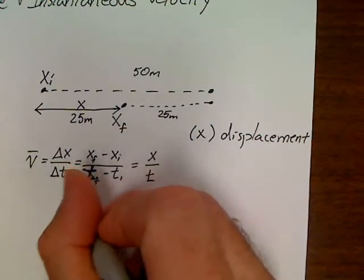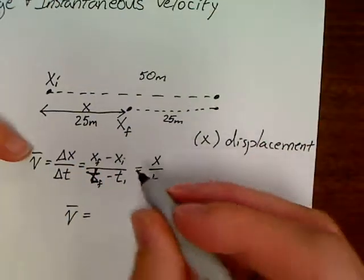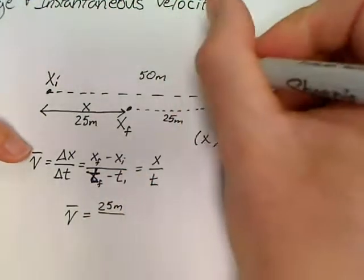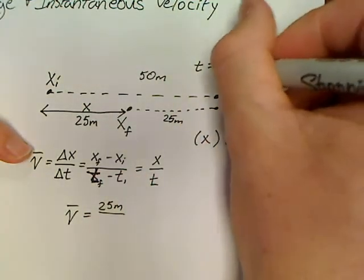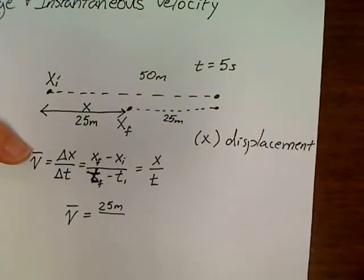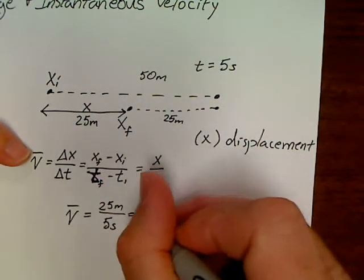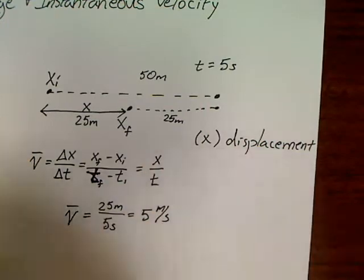So, let's say that our average velocity, then, would be, in this problem, 25 meters. And let's say that it took this person 5 seconds to make this trip. We'll say over 5 seconds of time, which is this person's average velocity of 5 meters per second.